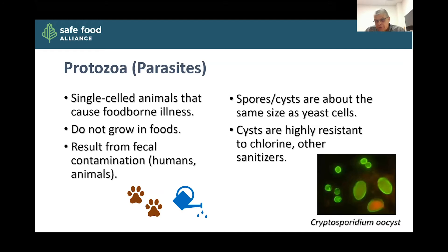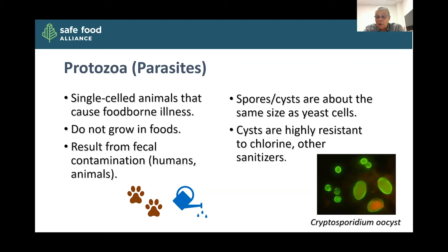The last group of organisms is the protozoa. These are also ones that don't grow in the food, but can come from contamination. They're basically single-celled parasites or single-celled animals that cause foodborne disease. Typically they come from fecal contamination, either from humans or animals — one vehicle for contamination is often irrigation or spray water. The spores or cysts are about the same size as a yeast cell, and like endospores or mold spores they're a resistant structure that enables the organism to survive and get into the host. One challenge is these cysts are often highly resistant to chlorine or other sanitizers. The city of Milwaukee had an outbreak of cryptosporidium some years ago traced to animals getting into the water system and causing illness.